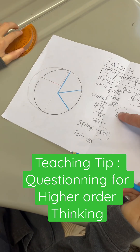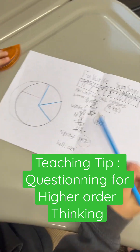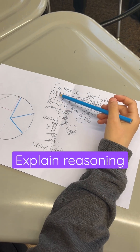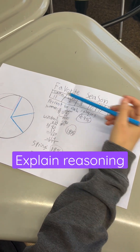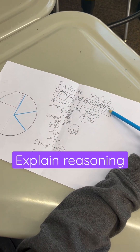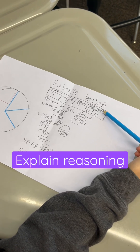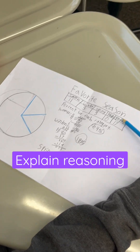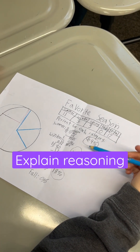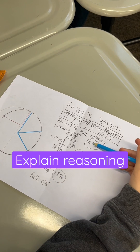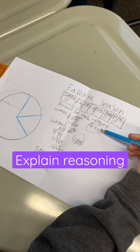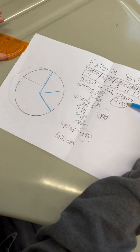So what do these percents here represent? For summer, I did 11 over the total, which is 17 — the total amount of votes. And I got 0.64, which I turned into a percent: 64%.